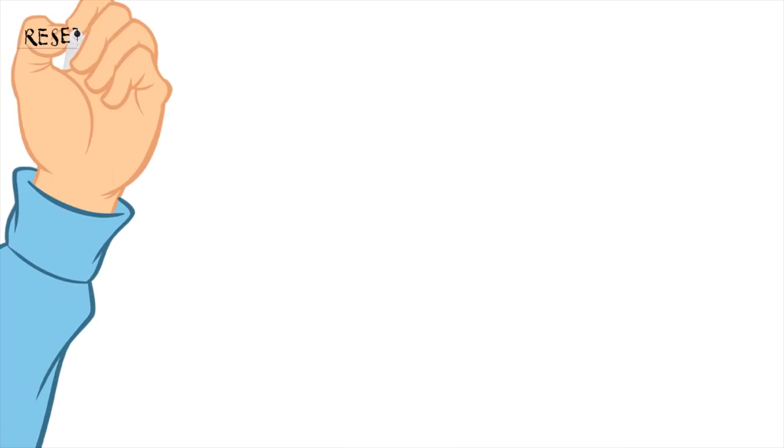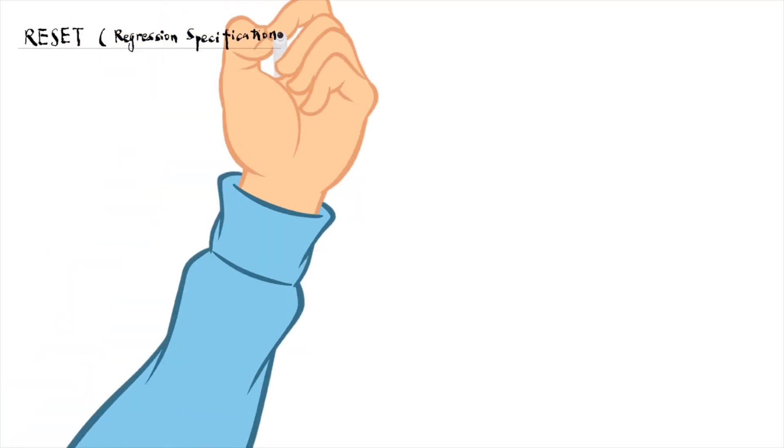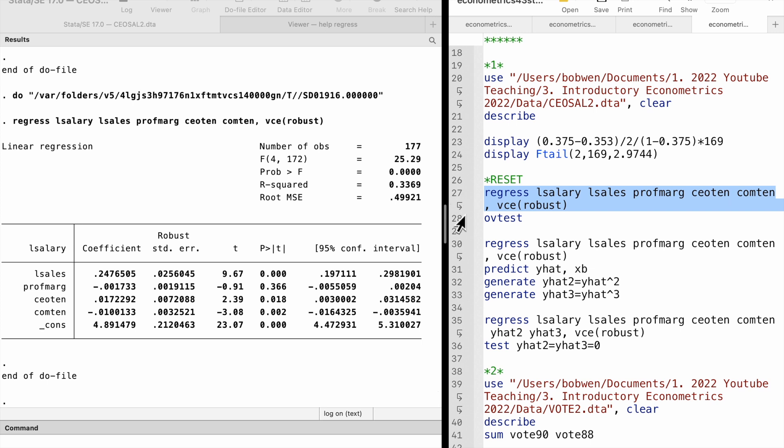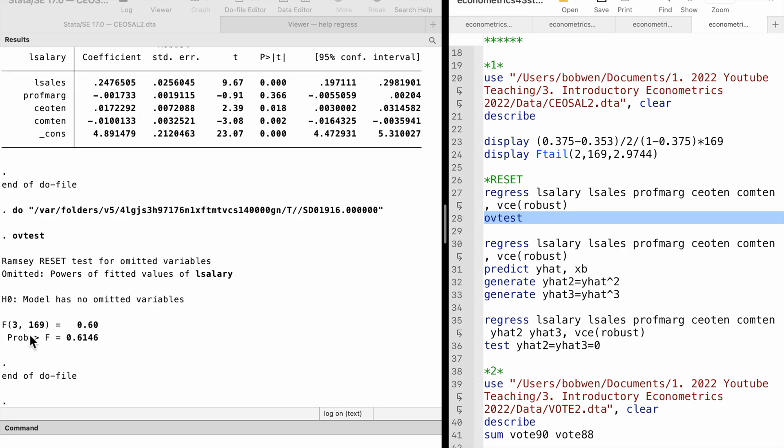We can also test for functional form misspecification by RESET, the regression specification error test. In Stata, we can use the OVtest command to perform the RESET test.